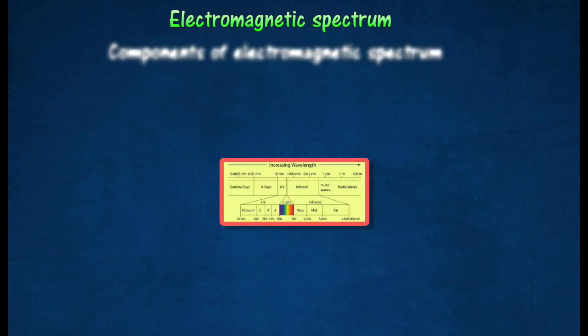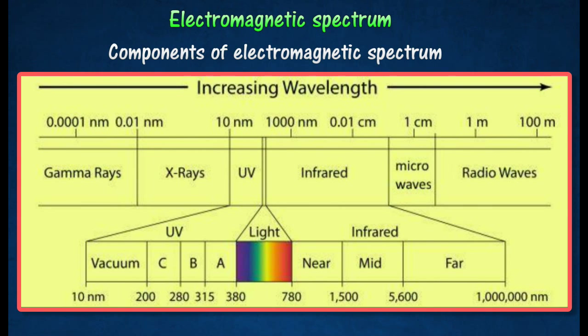Radio waves, microwaves, infrared radiation, visible light, ultraviolet radiation, x-rays, and gamma rays are the components of the electromagnetic spectrum.